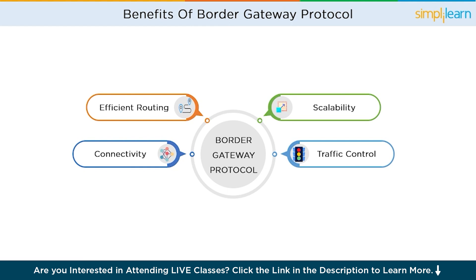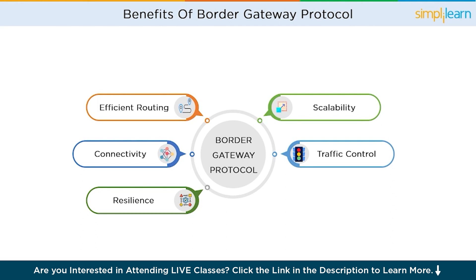Internet traffic control. BGP gives organizations control over their internet traffic. They can influence the flow of data by setting policies and preferences in routing decisions. This allows them to prioritize certain paths, avoid congested routes, or direct traffic through specific ISPs or network links. With BGP, organizations have the flexibility to optimize their network performance and ensure efficient data transmission. Internet resilience. BGP enhances internet resilience by quickly adapting to network changes and failures. If a link or route becomes unavailable or congested, BGP can reroute traffic through alternative paths, helping maintain connectivity even in the face of network disruptions, ensuring uninterrupted communication.